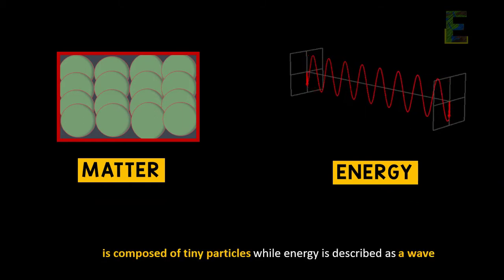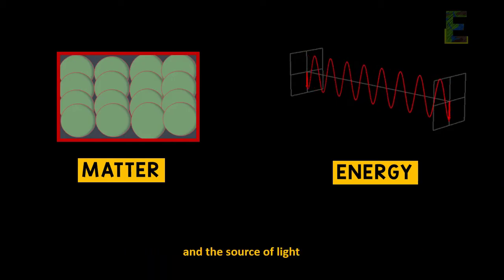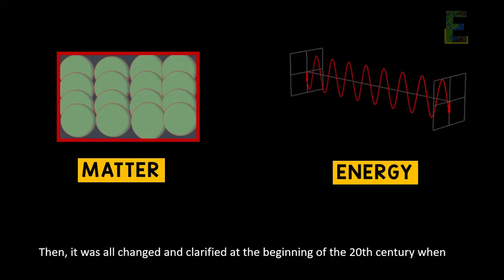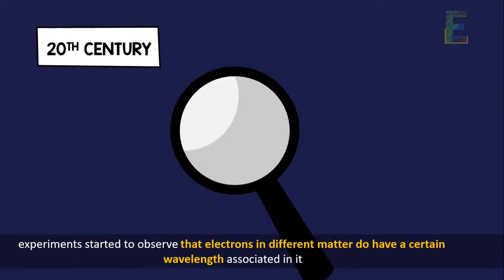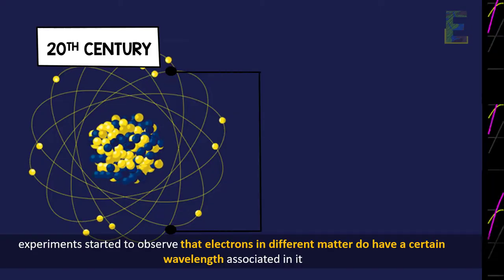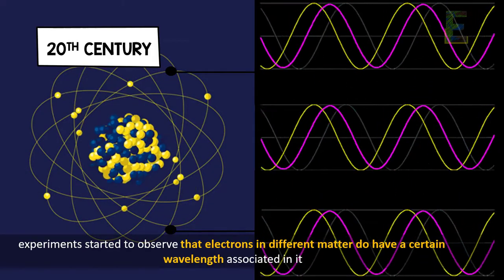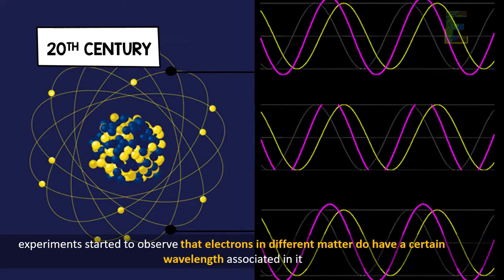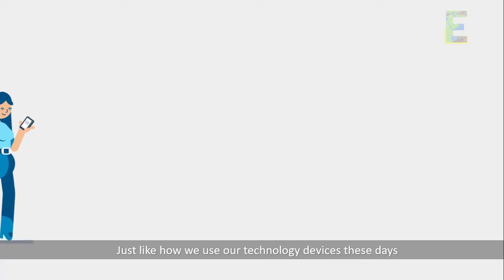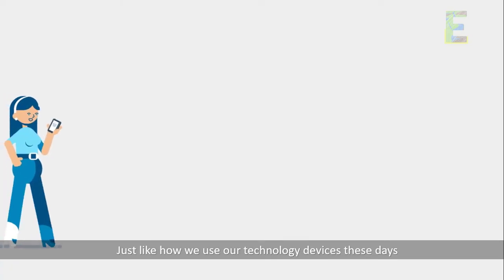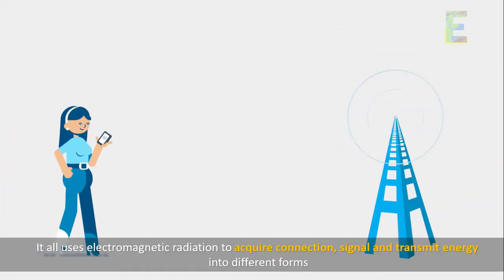Then it was all changed and clarified at the beginning of the 20th century when experiments started to observe that electrons and different matter have a certain wavelength associated with it. Just like how we use our technology devices these days, it all uses electromagnetic radiation to acquire connection signal and transmit energy into different forms.